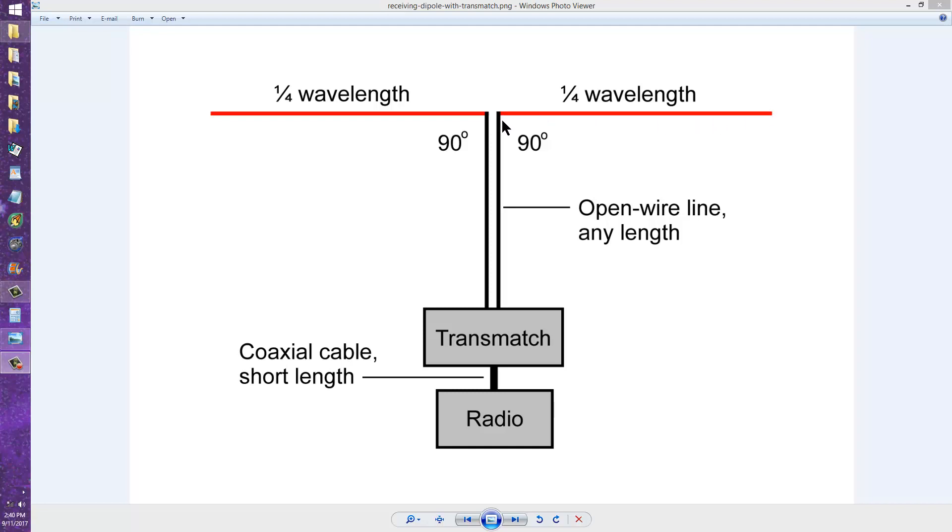In other words, suppose you want to make a half-wavelength dipole just for receiving, and you want to use it on some other frequency besides its resonant frequency. A 66-foot-long antenna, 33 feet on each side, would be resonant on about 7 MHz. But as you depart from that frequency, the antenna will not perform as well because it's no longer matched properly to the receiver.